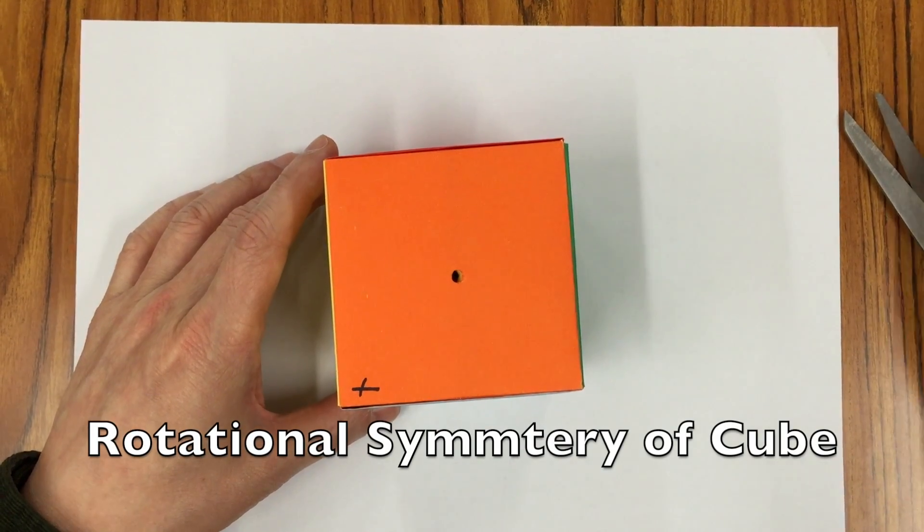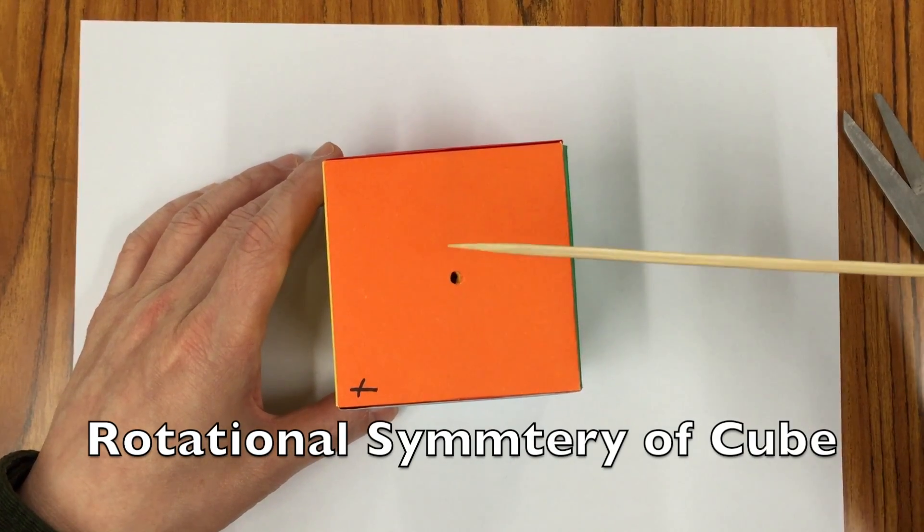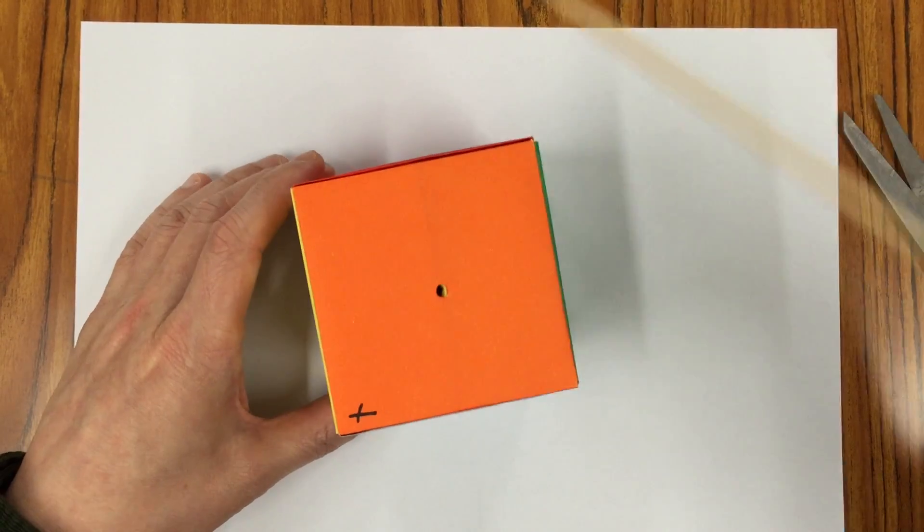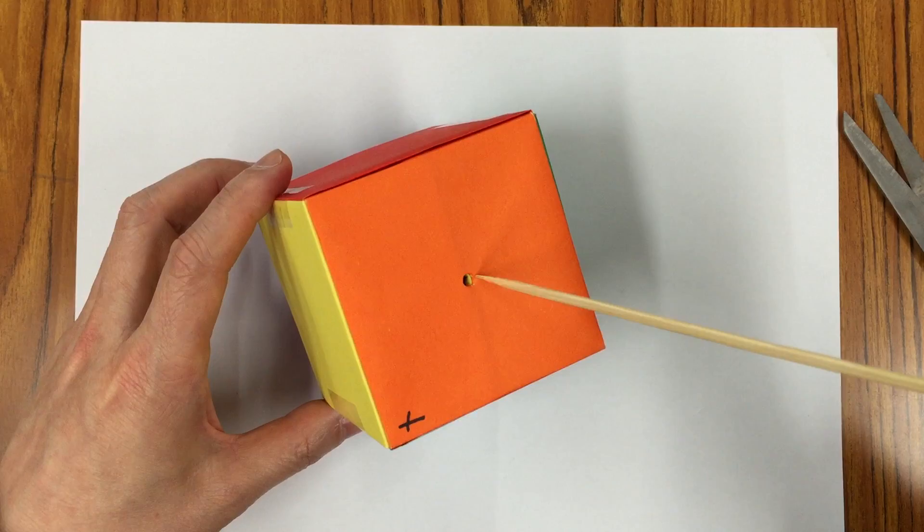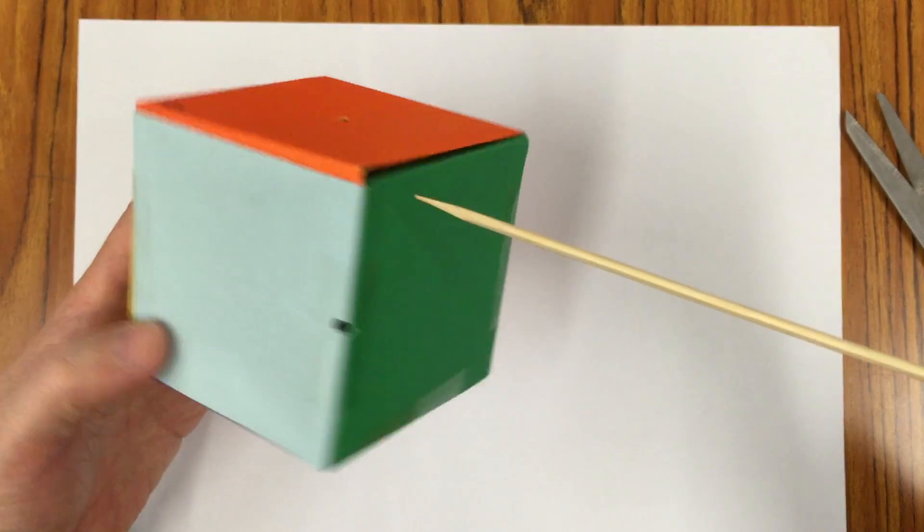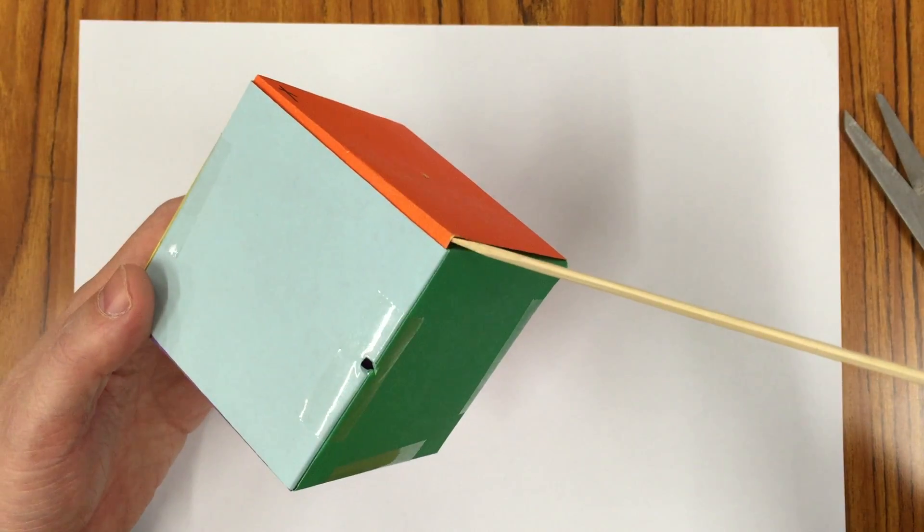Finally, can we have the third form of rotational symmetry of a cube? Remember, the first one is order four - we put the stick through the center of the face, and the second one we put the stick in one of the vertices.